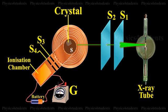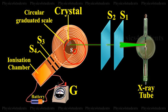This fine X-ray beam is then made to fall upon the crystal C, usually sodium chloride crystal, which is mounted on the spectrometer table. This table is capable of rotation about a vertical axis and its rotation can be read on a circular graduated scale S.